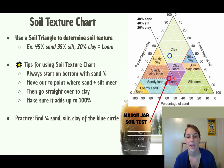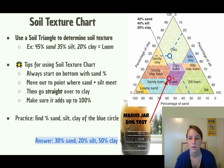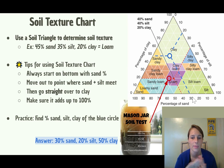Here is the answer for the blue circle. Starting with sand — going up diagonally, that's 30%. Then for silt, where those two connect is 20%. Then going straight over to clay gives us 50%. So it's 30% sand, 20% silt, and 50% clay. Add those up and you get 100%, so we did it correctly.